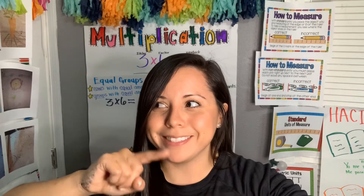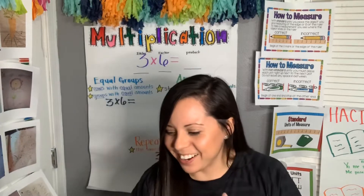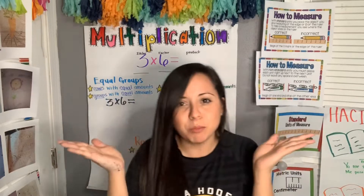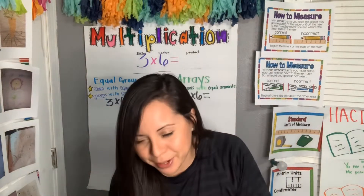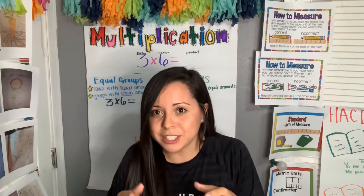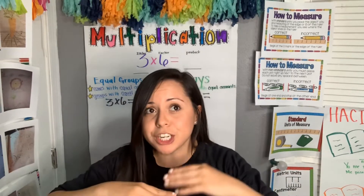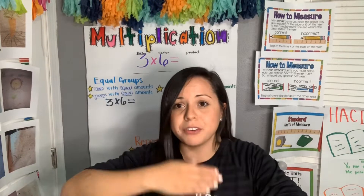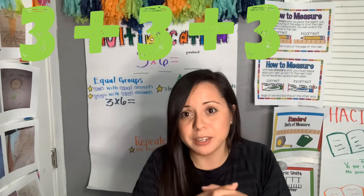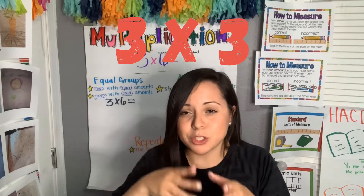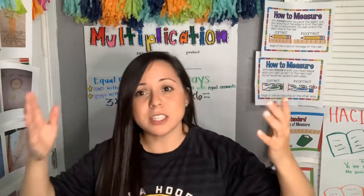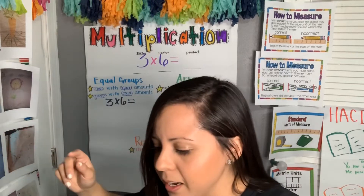The first thing we are going to review is: what does multiplication mean? Multiplication is an operation in which a number is added to itself several times. For example, three plus three plus three would be three times three, because the number three is added three times. That's what multiplication is.